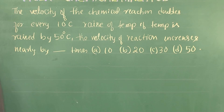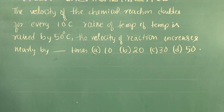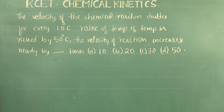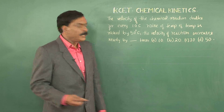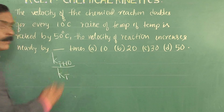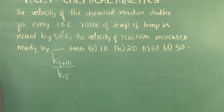Temperature is one of the factors which affects the rate of a reaction. For most reactions, when the temperature is increased, the rate increases. Experimentally, when the temperature is raised by 10°C, the rate of reaction gets doubled. This leads us to the concept of temperature coefficient: the ratio of the rate constant at 10°C higher temperature to the rate constant at a given temperature.